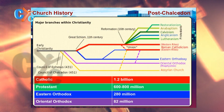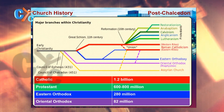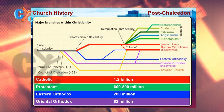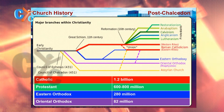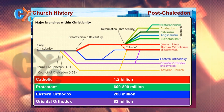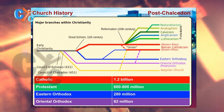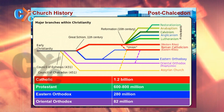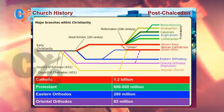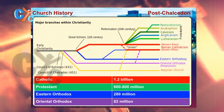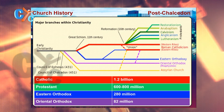Looking at the chart on the screen, you can see the main Christian denominations in today's world. The Catholics in red have about 1.2 billion followers, the Protestants 600 to 800 million, the Eastern Orthodoxy around 200 million, and the Oriental Orthodox around 82 million. The yellow line at the bottom represents the Assyrian Church, which is the Nestorian Church in Iraq.